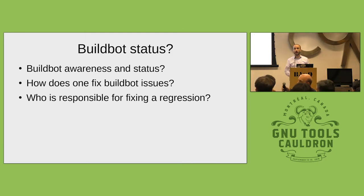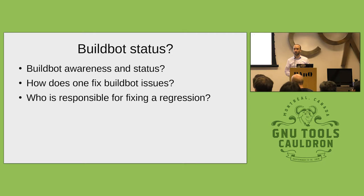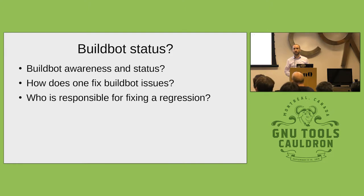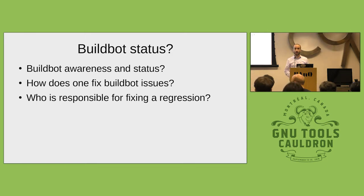I want to reflect that the GDB build bot output is spectacular — you can drill down all the way to stdout for a test and see why something failed. We may be behind on our build bot version or need better integration, but copying GDB's approach should be our primary modus operandi right now.